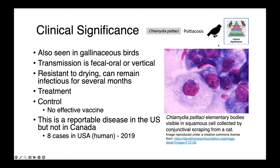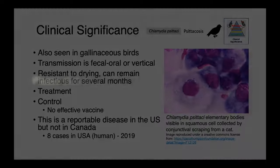In this image on the right, you can see Chlamydia psittaci elementary bodies in a squamous cell collected from a conjunctival scraping from a cat — just emphasizing that broad host range. It's not only people and birds, but cats and other species can also be infected.